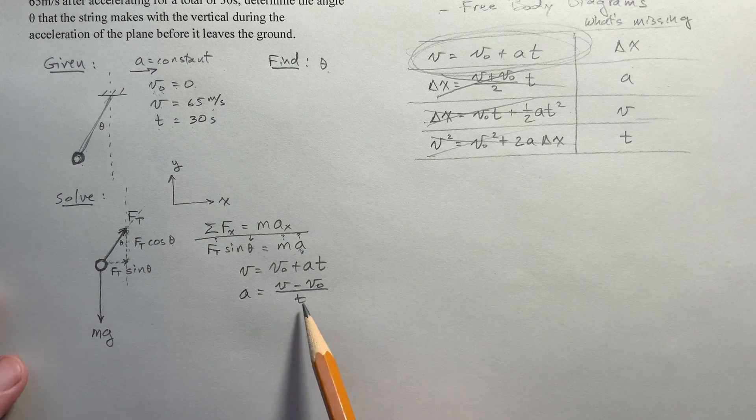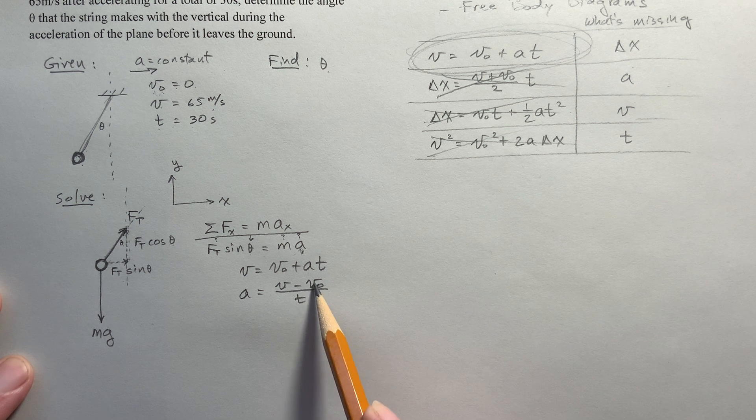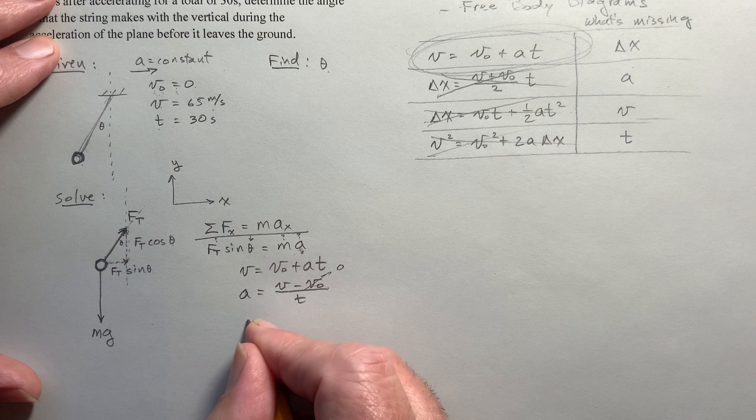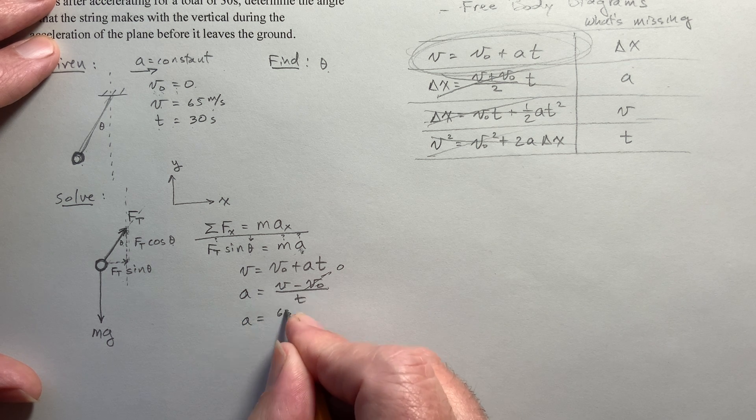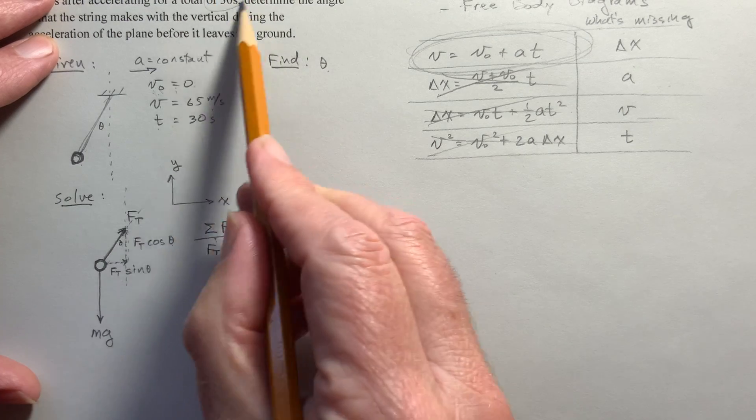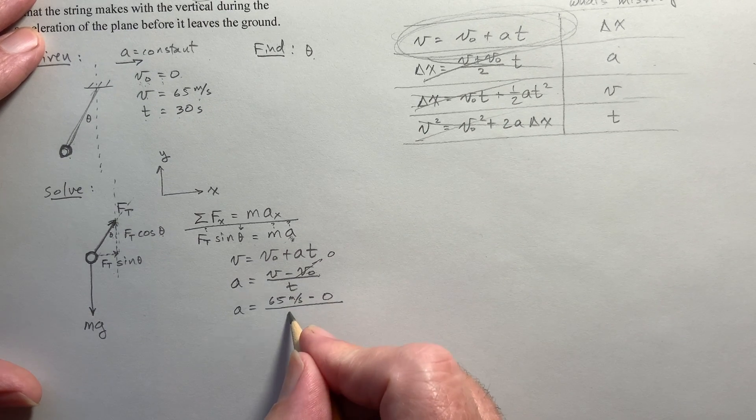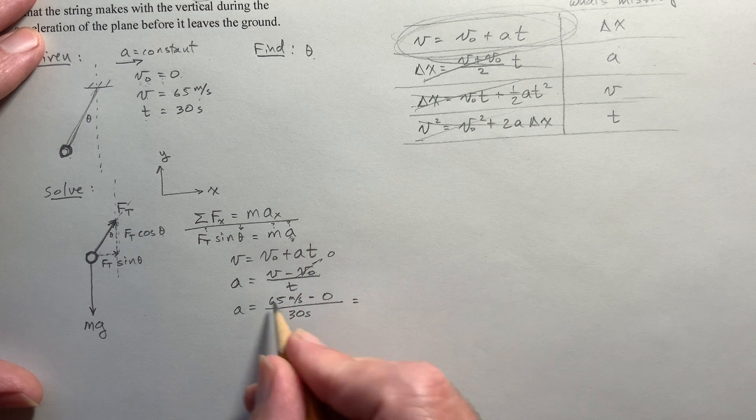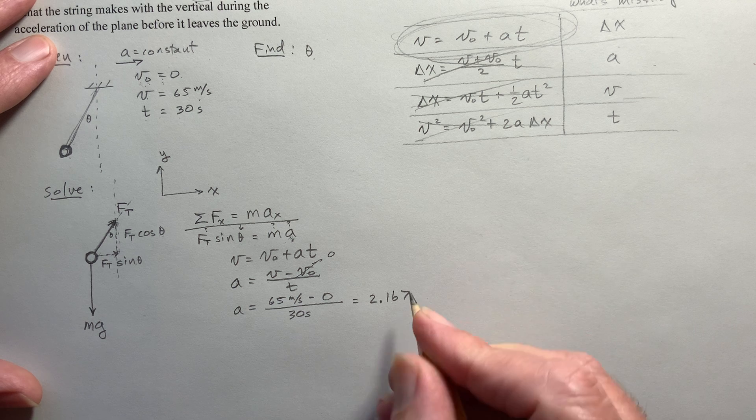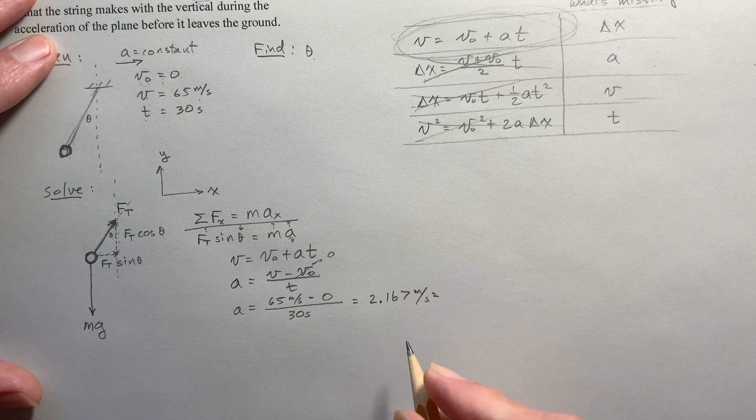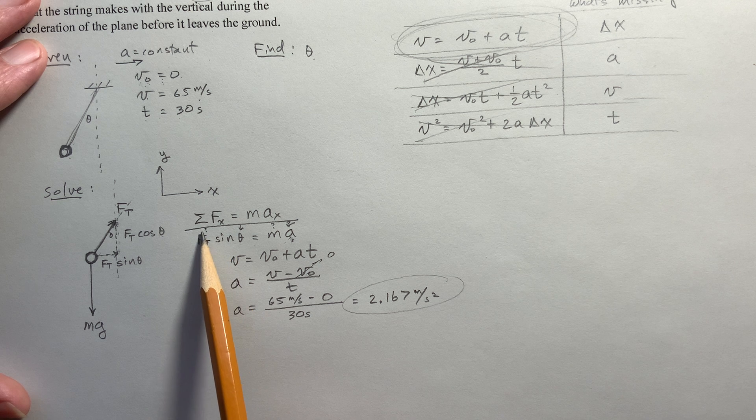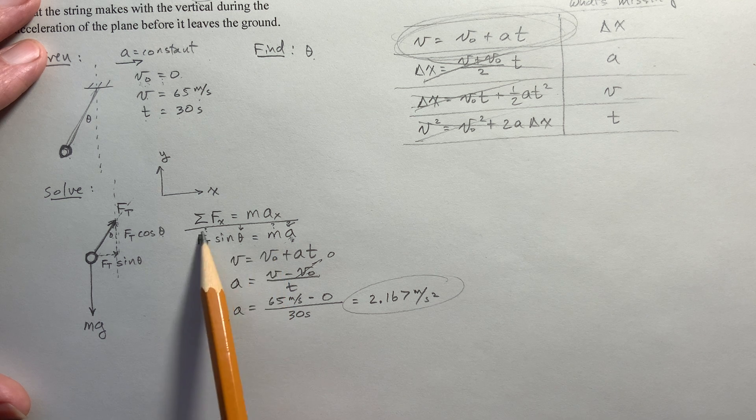My displacement is also equal to my initial velocity times time. This is the displacement due to the fact that the object had initial velocity plus one-half AT squared. And this is the displacement of the object because the object accelerated during the time interval. And then we have this equation. The final velocity squared equals the initial velocity squared plus twice the acceleration times my displacement. Now, these all interact together. They're all kind of telling the same story. So why do we have four of them? Well, this should be review for you, but that's okay. It's good to review. What's missing?